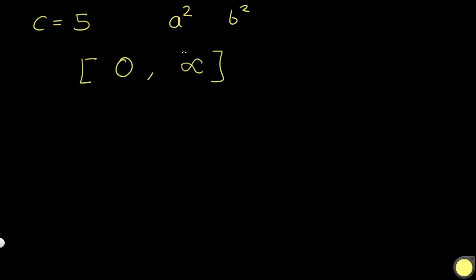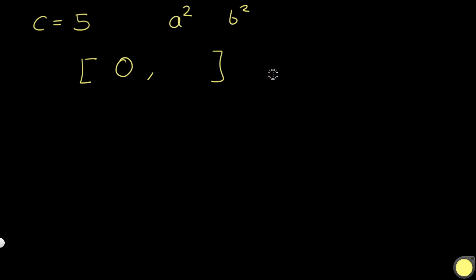We can make it even easier. If we go up to 100 but c is 5, there's no reason to go to a value greater than 5. If we take the value 5 itself, 5 squared is 25 — that's already too big. So we can stop our search space at the value c itself: 0 to c.